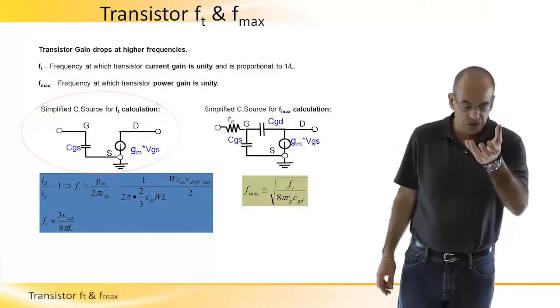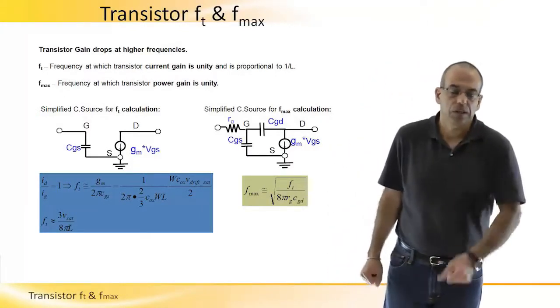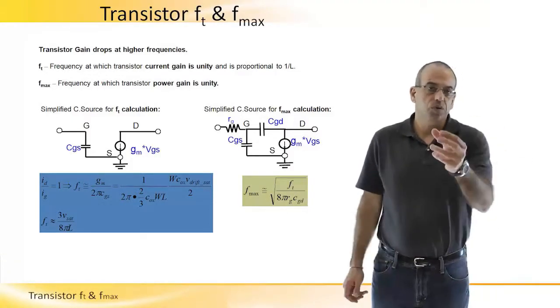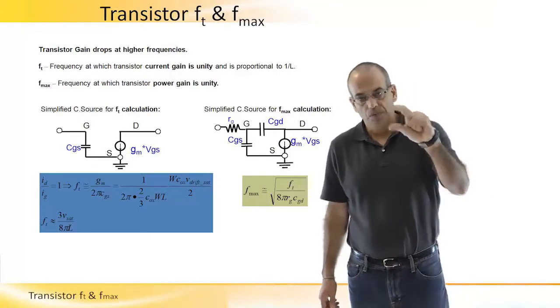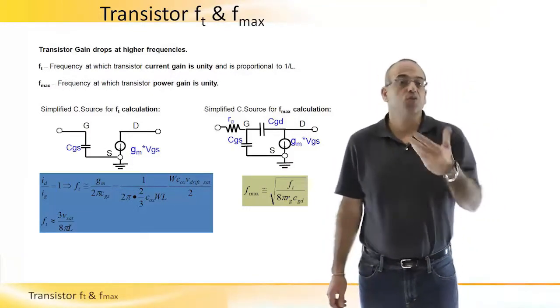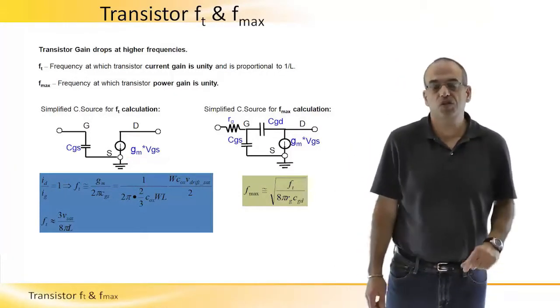When the input capacitance is seeing this VGS, the output current will be GM times VGS. This is how this transistor amplifies.